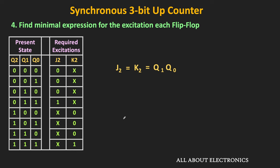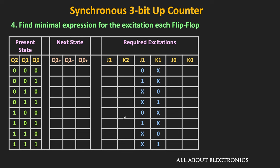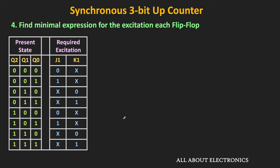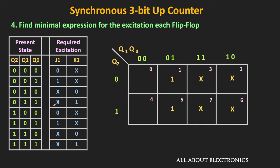Now let us find the minimal expression for J1 and K1. J1 is equal to 1 for two different input combinations: 001 and 101, while four input combinations are don't-care terms. Mapping these minterms in the K-map, by using two don't-care terms we can make a group of 4, covering all the ones in the K-map. This group corresponds to Q0. So the minimal expression of J1 = Q0.